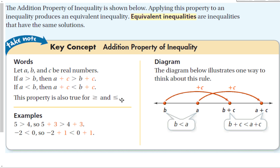Looking at the diagram below to illustrate one way to think about this rule: if we take b and add c to it, and if b is less than a, and we add the same c to both, the answer is still less than the other answer. For example, 5 is greater than 4. So 5 plus 3 is greater than 4 plus 3. 8 is greater than 7. The same thing works with negative numbers.